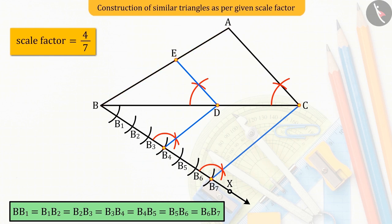This gives us the required triangle EBD, whose sides are in the ratio 4 upon 7 of the corresponding sides of the given triangle ABC.